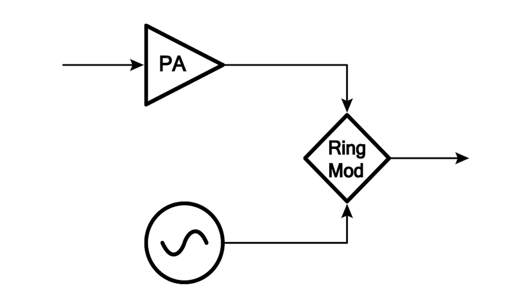Here we see how simple this patch can be. An instrument is amplified and sent to one input of a ring modulator, while another audio source — in this case a sine wave — is sent to the carrier input.